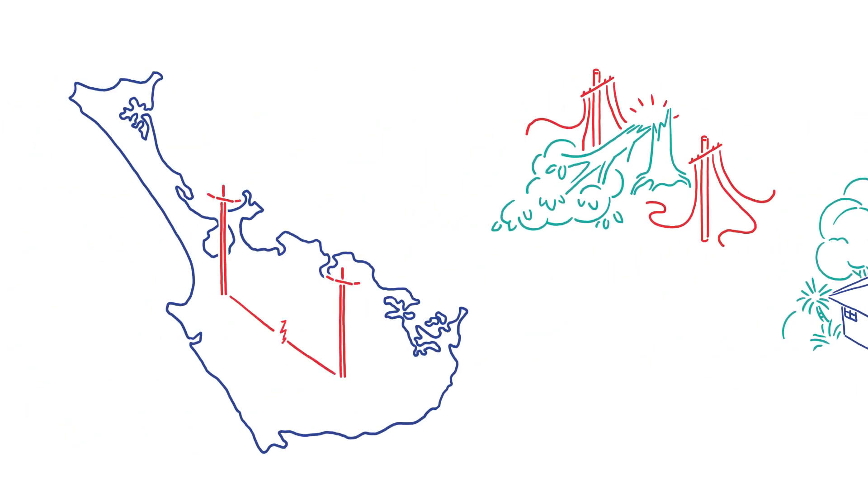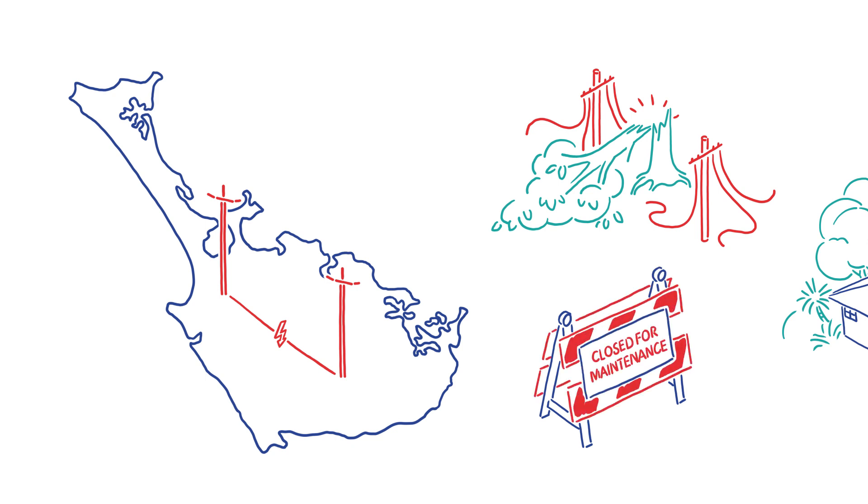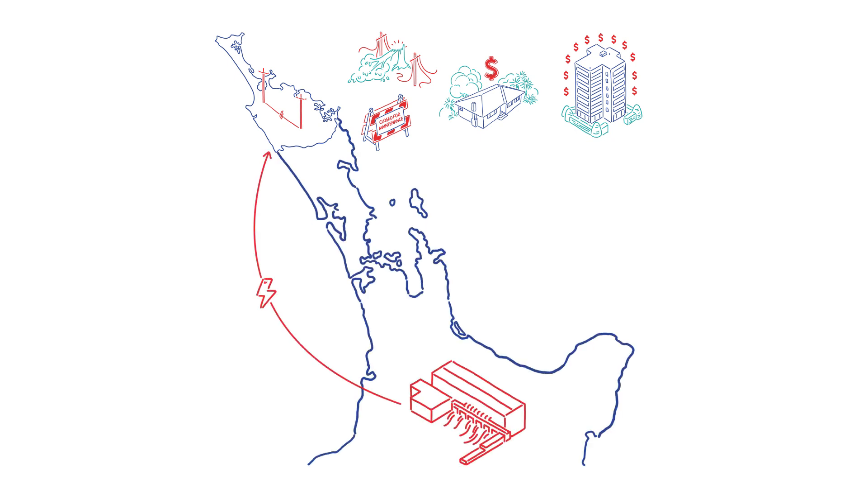We've only one high-voltage transmission line through the middle of the Far North. This line's getting older, which means it has to be taken out of service more often for maintenance. We also rely on getting the majority of the electricity into our region from power stations in the Waikato.